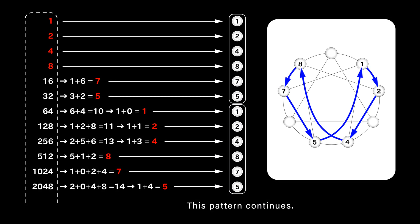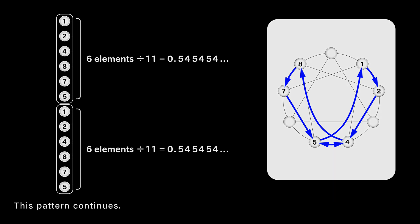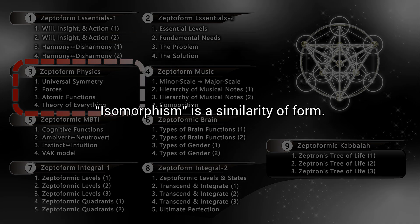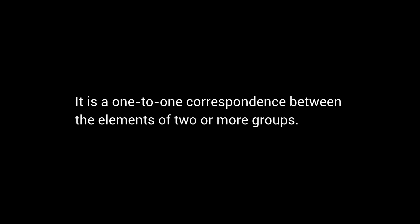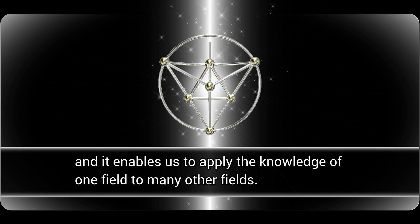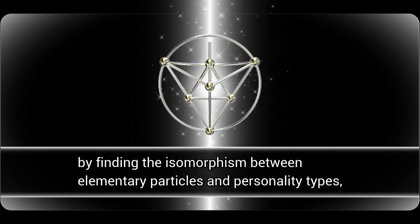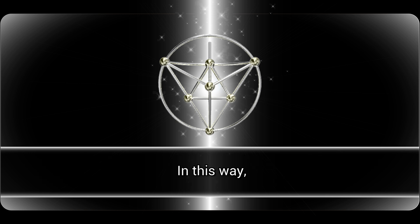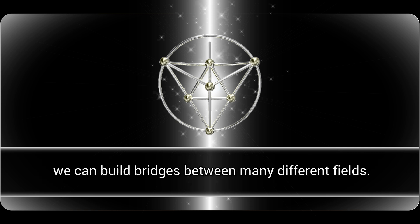The algorithm of these additional processes will be discussed in module 1 and module 2. In module 3, we discussed the isomorphism between personality types and elementary particles. Isomorphism is a similarity of form — it is a one-to-one correspondence between the elements of two or more groups. The zeptoform is used to see various kinds of isomorphism in the universe, and it enables us to apply the knowledge of one field to many other fields. By finding the isomorphism between elementary particles and personality types, we will be able to use the knowledge of particle physics for analyzing personality types, and vice versa. In this way, we can build bridges between many different fields.